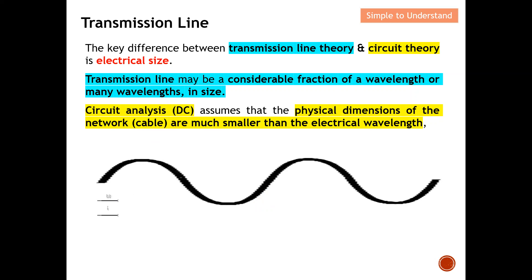Under circuit theory classification, we can do DC analysis and use lumped elements R, L, and C to represent the equivalent circuit. For transmission lines, I will explain further why we can't directly use lumped elements to represent them — but we can do a little tweak to make lumped elements work, which I'll go through soon.